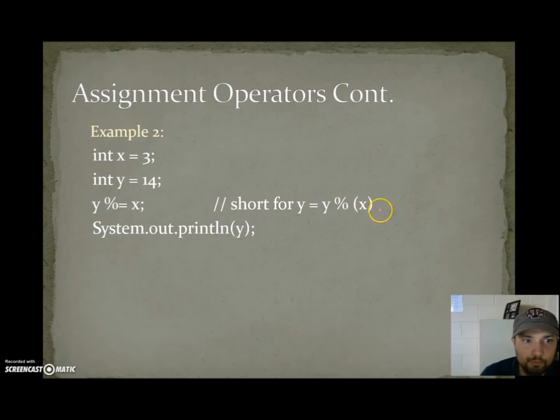Going to example 2. We have x is 3, y is 14, and we say y percent equals x. So that seems a little complicated, but it's not. Remember, it's equal to itself, so it's becoming itself modulus x. Itself is 14. 14 percent 3 means divide 14 by 3. What's the remainder? Well, 3 goes into 14 four times with 2 left over, so our answer should be 2. Now let's go ahead and move on to the next slide.